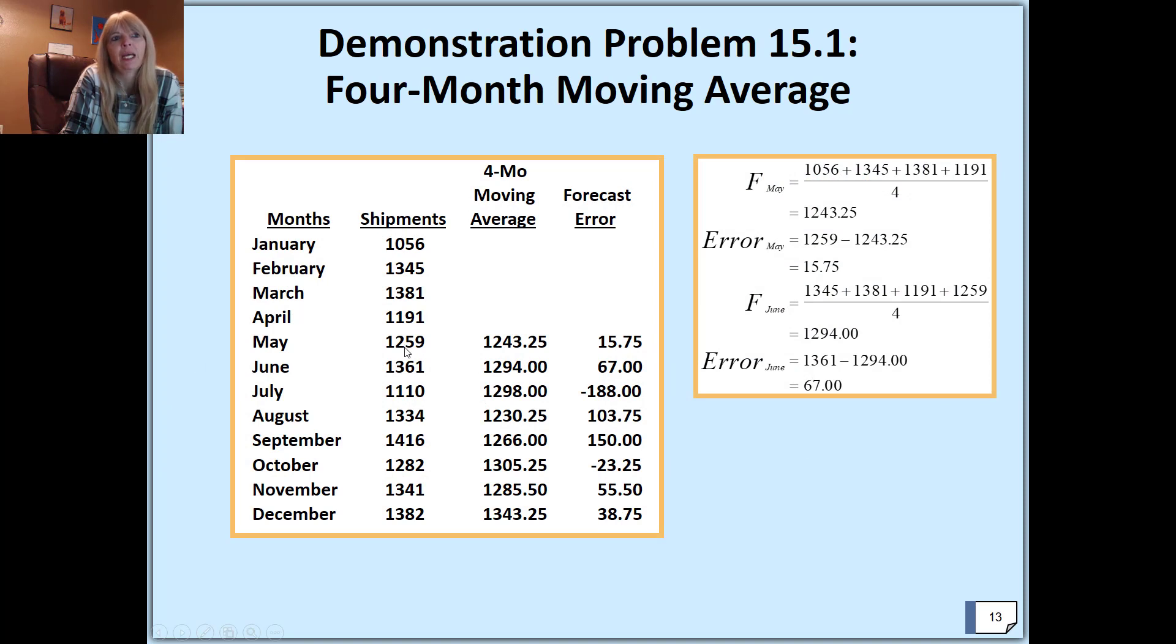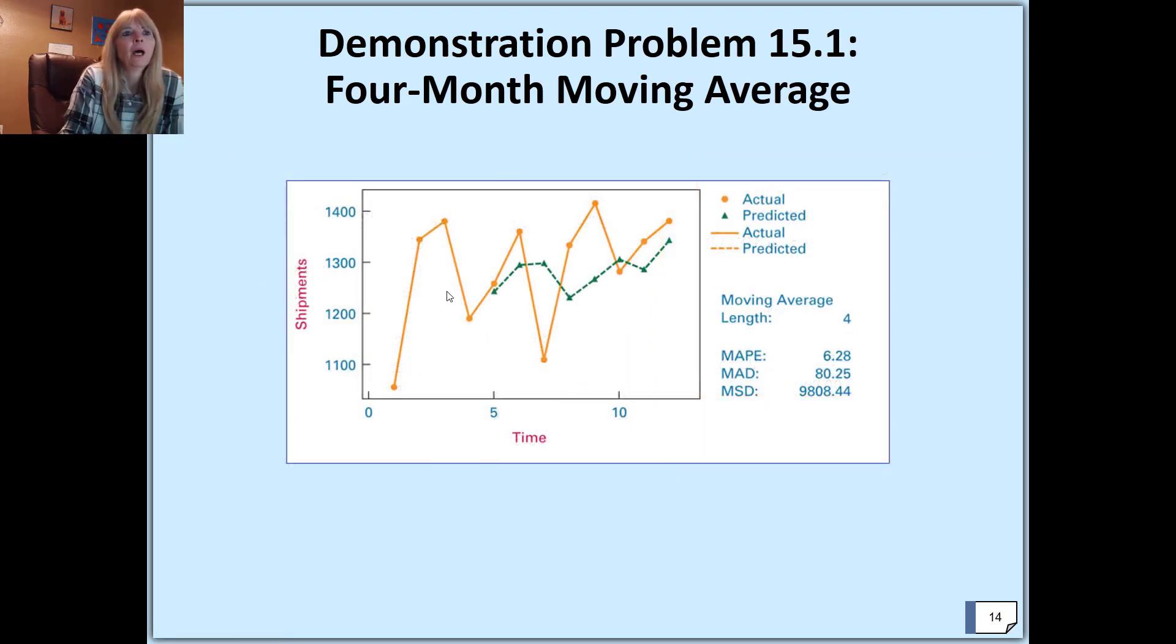This example shows May—notice they use January, February, March, and April, so the previous four months, and then divide by four because that's four values. Then look to see how much actual error you would have. I do this in Excel, so I'm just talking about it right now. This is a smoothing technique, so instead of all these fluctuations—and why it's moved over is because we're forecasting for the fifth month based on the previous four months.